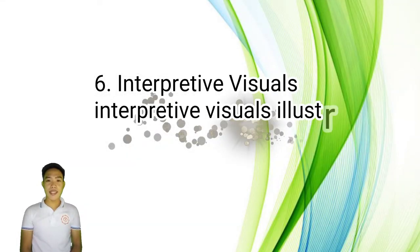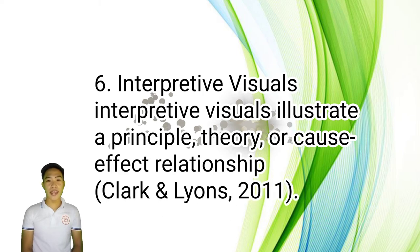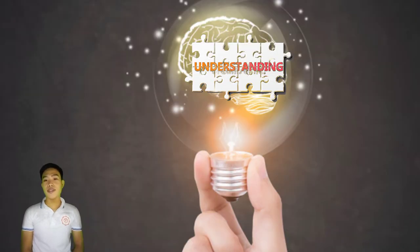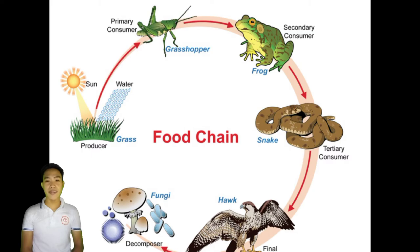Number six is interpretive visuals. Interpretive visuals illustrate a principle, theory, or cause-effect relationships, as according to Clark and Lyons 2011. Additionally, interpretive visuals help learners understand processes or events that are usually invisible or abstract. Have a look at this example — an interpretive visual that depicts the food chain.